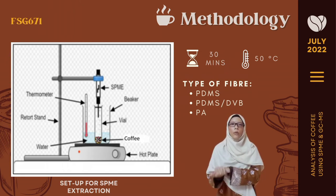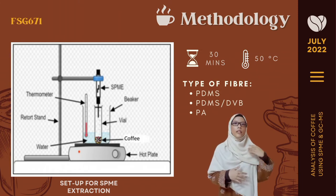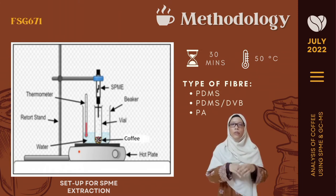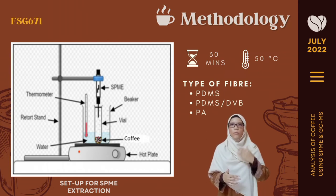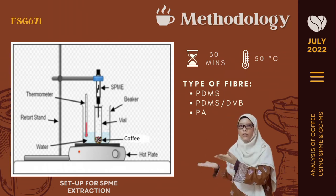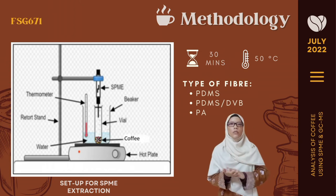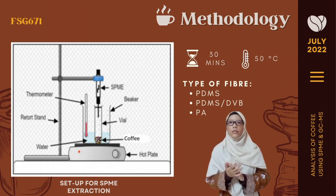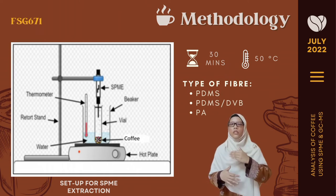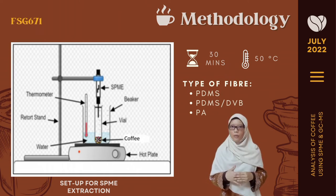The coffee powder is purchased and weighed using an analytical balance in an SPME vial, which is then placed in a water bath. The setup of the SPME extraction is shown in the picture beside me. The extraction time and temperature are set for 30 minutes at 50 degrees Celsius, before the fiber is introduced into the GC injector port for 3 minutes.